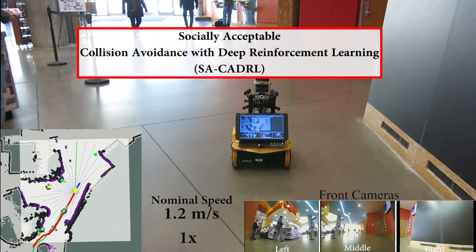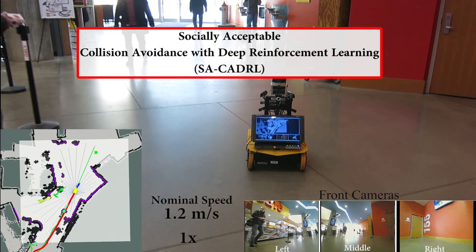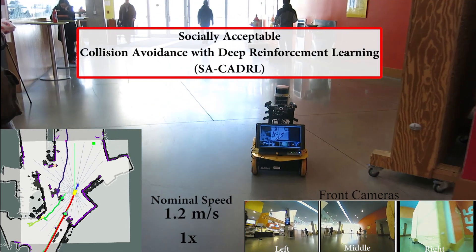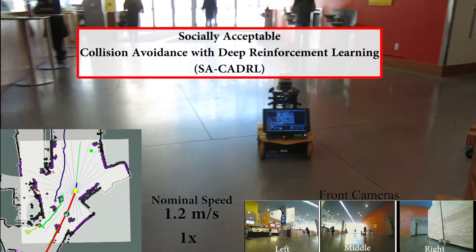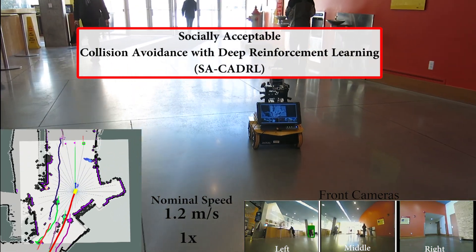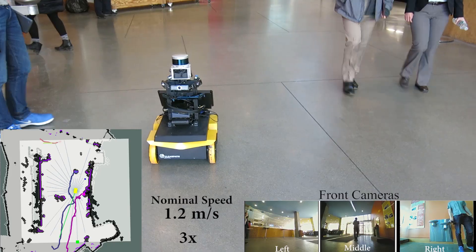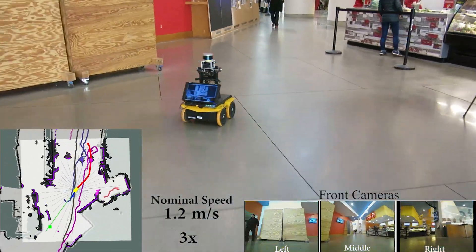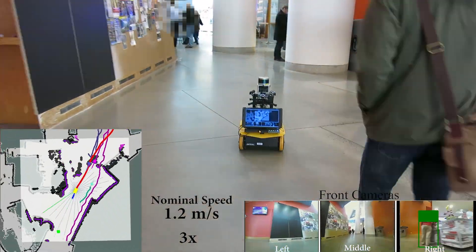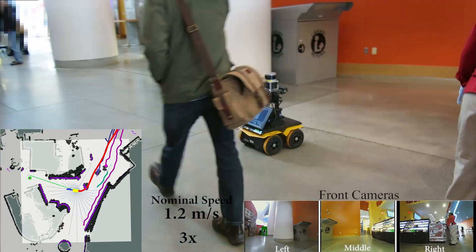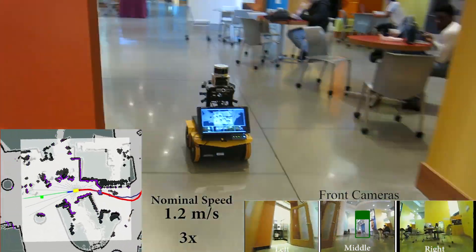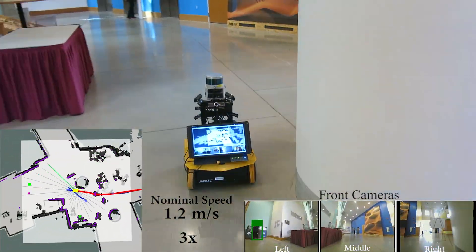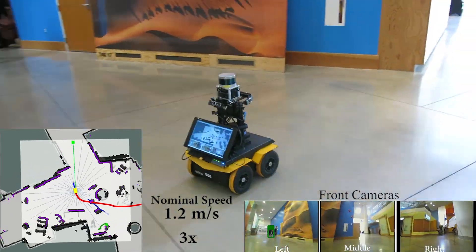The vehicle uses SA-CA-DRL, an algorithm developed in this work, to move the vehicle toward its sub-goal while taking into account the motion of nearby pedestrians. The next several clips show the robot driving to different places inside a building. At a nominal speed of 1.2 meters per second, the robot generally maintained a safe distance with pedestrians and respected right-handed social norms.